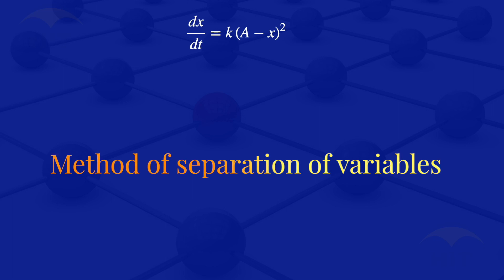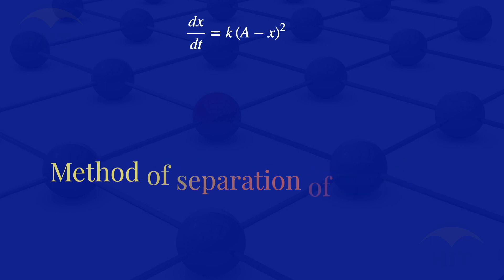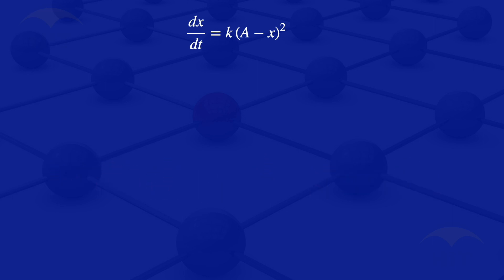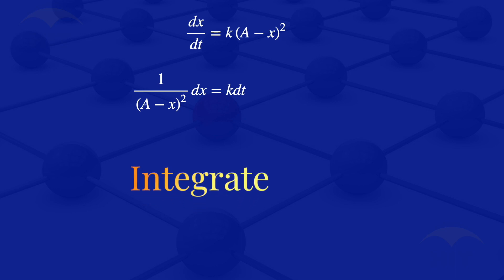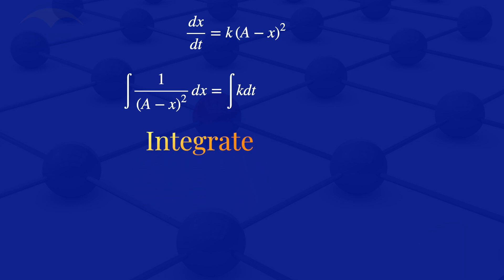We can separate the variables: putting the x terms on one side and the constants on the other. This gives us 1 divided by (a minus x) squared dx equals k dt. After separating variables, we integrate both sides: the integral of 1 divided by (a minus x) squared with respect to x equals the integral of k with respect to t.